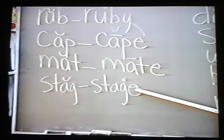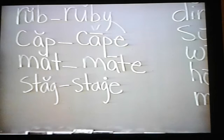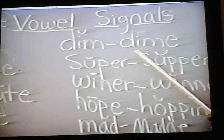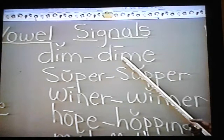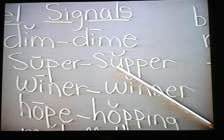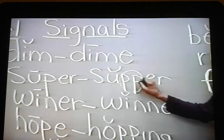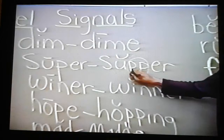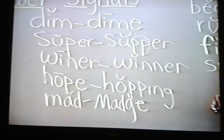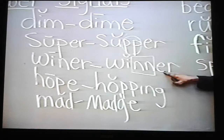Dim and dime. The vowel signal E hits a vowel before it and makes it say its name. Super and suffer. The vowel signal E hits that vowel before it and makes it say its name. Here we double the consonant because we have now pushed the vowel signal too far away to act, so this vowel is now short. Whiner and winner. Here the very same thing has happened — we've doubled the consonant, pushing the vowel signal too far away to make it say its name.